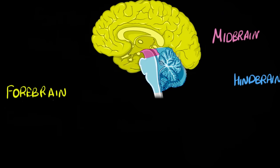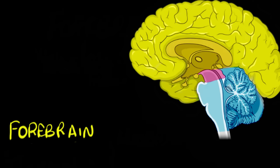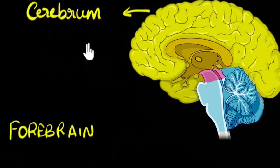Let's start with the forebrain. Looking at the forebrain, you can see two sections of it: the outer section, which contains a lot of folds, and the inner section. The outer section — this big giant outer section — is called the cerebrum. This whole outer section, which is colored light yellow, is the cerebrum.